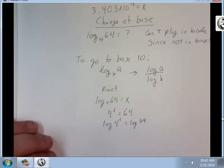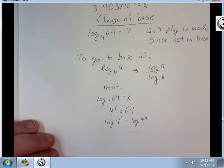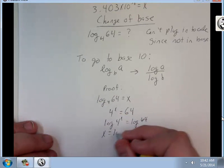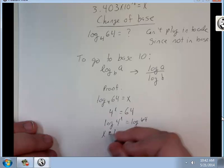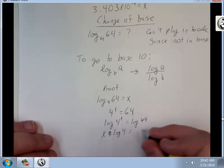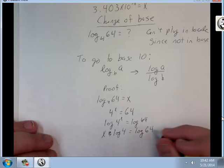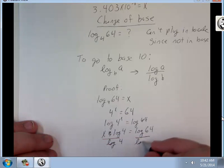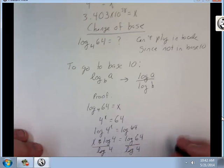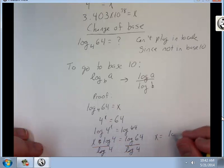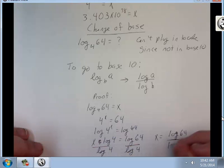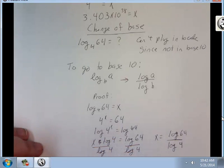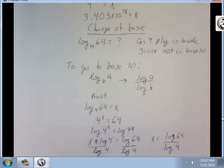Log of both sides: x log 4 equals log 64. X equals log 64 divided by log 4. Look what I get. Look at that.